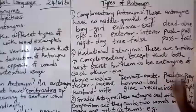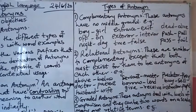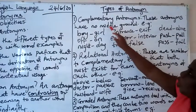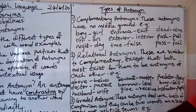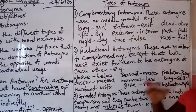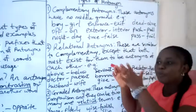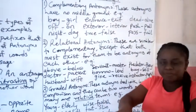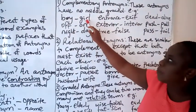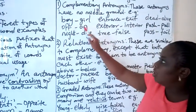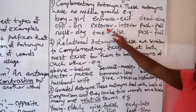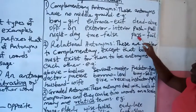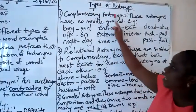Now we look at the types of antonyms. First, we have complementary antonyms. These are antonyms that have no middle ground — one doesn't need the other to exist; it's simply there as the opposite. Examples include: boy/girl, off/on, night/day, entrance/exit, exterior/interior, true/false, dead/alive, push/pull, and pass/fail. These are what we call complementary antonyms.